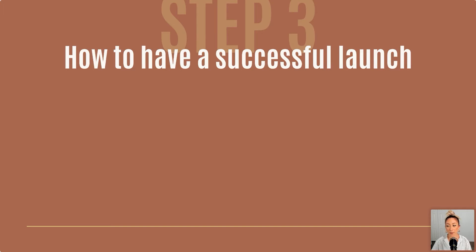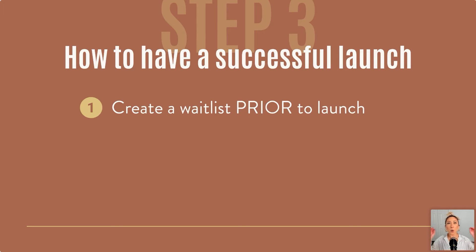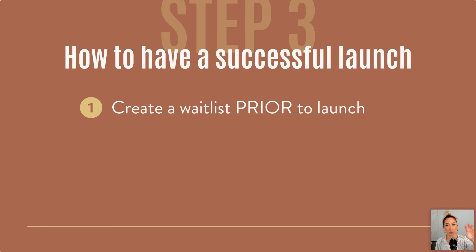Let's talk about how to have a successful course launch and make money. First: create a waitlist way, way before you launch. As soon as you validate the course topic and know you're going to create it, make a waitlist on Google Forms — it's free. Put it in your link in bio with a call to action like 'Get on my Christmas Light Display course waitlist.' Keep it there for as long as it takes to create the course — weeks or months — because you're building warm leads of people willing to buy that specific thing from you, and those are the people you email when you launch.